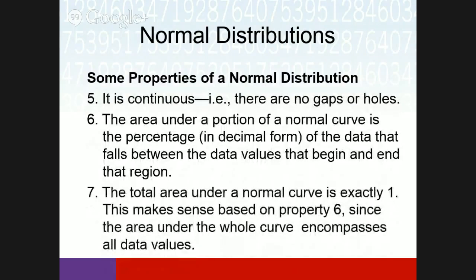It's continuous — that's more the calculus concept. You can't find the area if it's not continuous. The area under a portion of a normal curve is a percentage in decimal form of the data that falls between those data values. For example, if the area is 0.38, that means 38% of the data falls within that region. The total area under the curve is exactly 1, because 100% of the data must fall under the curve.